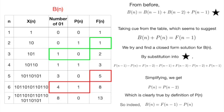We need to prove this, however. To do this, simply substitute this solution, which we guessed, which is B(n) equals F(n-1) minus P(n), back into our original recursive equation we found earlier.